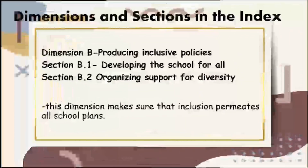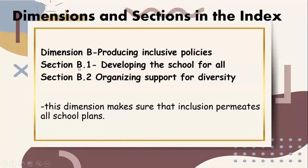The principles and values in inclusive school cultures guide decisions about policies and moment-to-moment practice in classrooms so that school development becomes a continuous process. Next is dimension B, producing inclusive policies, with section B.1, developing the school for all, and section B.2, organizing support for diversity. This dimension ensures that inclusion permeates all school plans. Policies encourage the participation of students and staff, reach out to all students in the locality, and minimize exclusionary pressures. Support is considered to be all activities which increase the capacity of a school to respond to student diversity, and all forms of support are developed according to inclusive principles within a single framework.